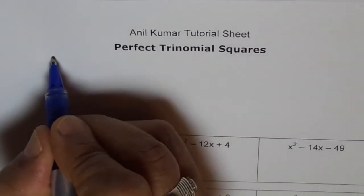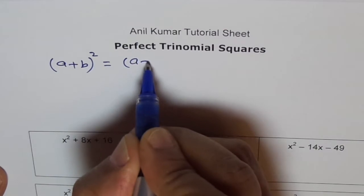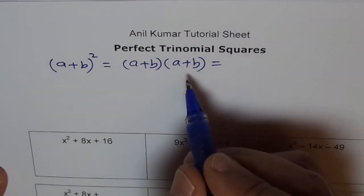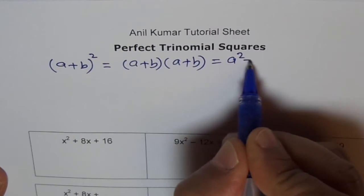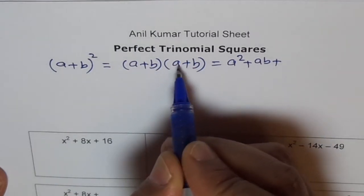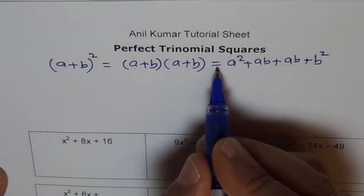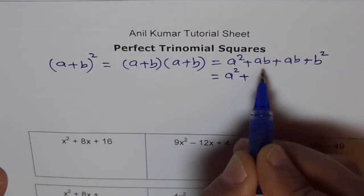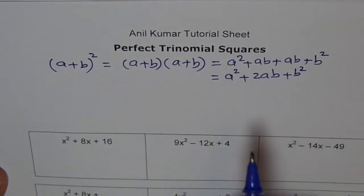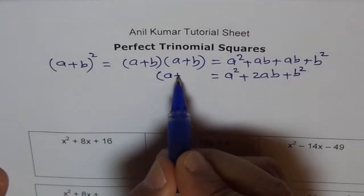Let's take the term a plus b whole square. This term can be written as a plus b times a plus b. And if we expand it, by now you are an expert on this, we get a times a is a squared plus ab plus ba, which we can write as ab by commutative law, plus b times b is b squared. We can write this as equal to a squared plus 2ab plus b squared. This one is a trinomial, and this trinomial can be written as a perfect square, a plus b whole square.